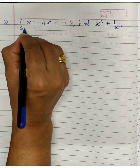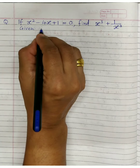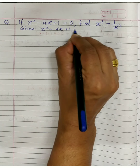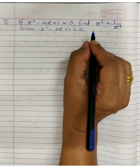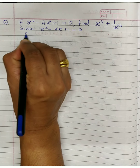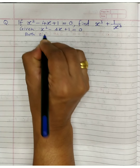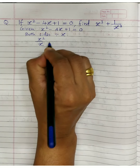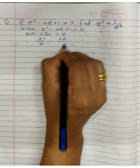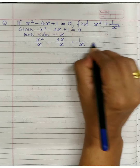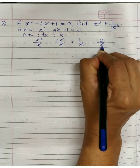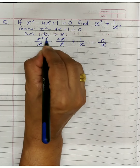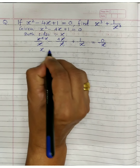We are given x square minus 4x plus 1 equals 0. Divide both sides by x: x square upon x minus 4x upon x plus 1 upon x equals 0. This simplifies — x squared over x becomes x, and the equation becomes x minus 4 plus 1 upon x equals 0.